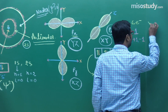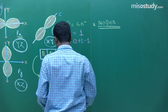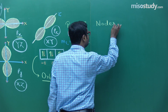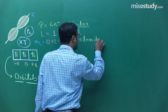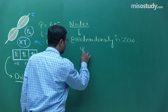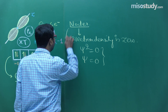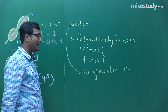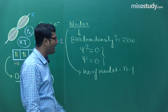Formally, a node is a point where the electron density — that is, the value of ψ² — is zero or tends to zero. The formula for the number of nodes is: number of nodes = n − 1, where n is the principal quantum number (n = 1 for the first orbit, n = 2 for the second orbit, etc.).